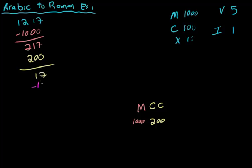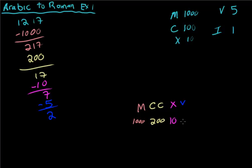I can take a 10 out of that, and that gives me 7. Because I took 10 away I put an X for 10. Then I can easily take a 5 out of the 7 — so 7 minus 5 is equal to 2. I put the V for the 5 that I just took out, and I need 2 more.